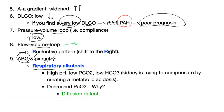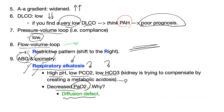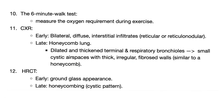ABG and oximetry show respiratory alkalosis because of the dyspnea — the patient is breathing rapidly, washing out CO2, leading to alkalosis. In alkalosis: high pH, low PCO2 because it's respiratory. The kidney compensates by creating metabolic acidosis, so HCO3 will be low. There is decreased PaO2 because of a diffusion defect from pulmonary fibrosis — it's very hard for oxygen to cross from the alveolus to the pulmonary capillary. You can do the six-minute walk test to measure oxygen requirement during exercise.